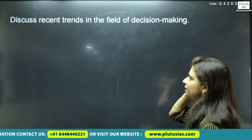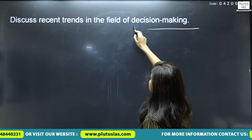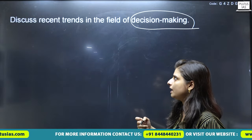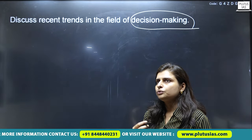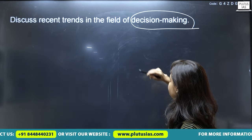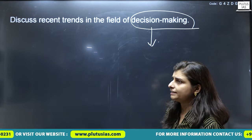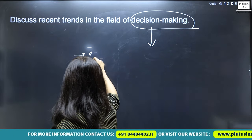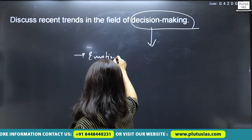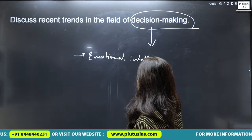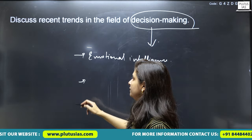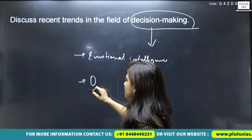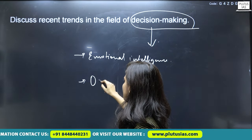The next question is: discuss recent trends in the field of decision making. This question is vast and expects you to cover multiple dimensions. Decision making depends upon multiple factors, for example, it depends upon your emotional intelligence, and also upon how optimistic a person is — which depends upon their psychological character.